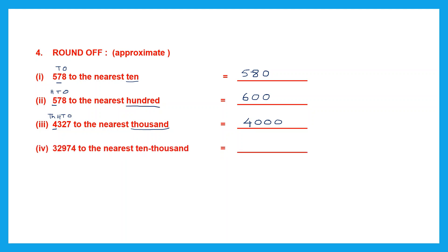Question 4: 32,974 to the nearest 10,000. Let's find that place — 1s, 10s, 100s, 1,000s, and 10,000s — that is 3. We underline 3 and look at the digit next to it, which is 2, less than 5. That means the underlined digit will not change. So we write 3 as it is and all the digits to the right will be replaced with 0s — there are 4 digits, so four 0s. Our answer is 30,000.